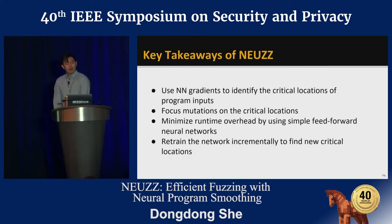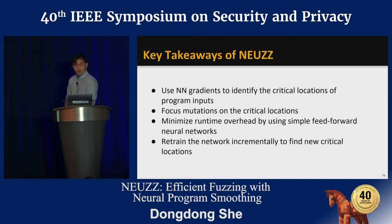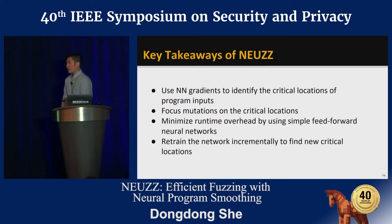Some takeaways of NOOS. First, NOOS uses gradient information to identify critical parts of inputs. Second, it focuses mutating on these locations. Third, NOOS runtime overhead is minimal because the neural network used in NOOS is a simple feed-forward neural network model and only takes one or two minutes to train on a GPU. Finally, we keep retraining our neural network model to find new critical locations. We open-sourced NOOS on GitHub.